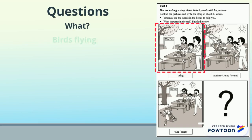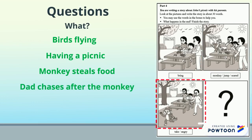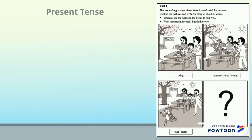What happens in the story? If you look at picture one, birds are flying and they are having a picnic. In picture two, the monkey steals the food and they get quite scared. In the end, Dad chases after the monkey. Finally, you have to decide how the story finishes. You can choose the ending.